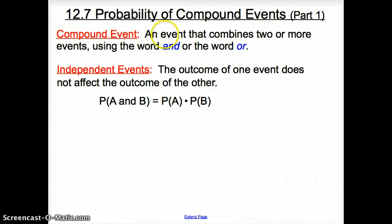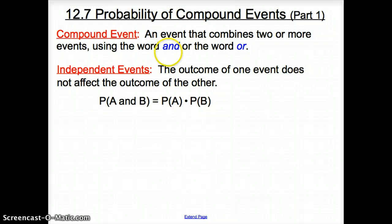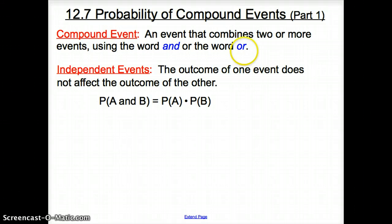A compound event is an event that combines two or more events using the word 'and' or the word 'or.' Now these two words sound very familiar, but if we think about it: if I have water and I have a soda, I have them both. But with the word 'or,' I have a water or I have a soda — I either have the water and not the soda, or the soda and not the water.